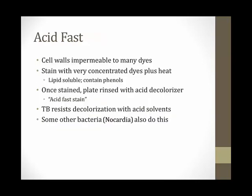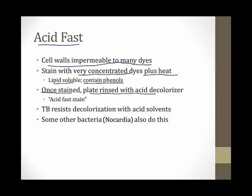Because standard stains don't work well, we use a special technique called acid-fast staining to identify tuberculosis. The cell walls are impermeable to many dyes, but they will stain with very concentrated, lipid-soluble dyes plus heat — these contain phenols, helping them penetrate the mycolic cell walls. After staining, you rinse with an acid decolorizer — which is why it's called an acid-fast stain. Tuberculosis resists decolorization with acid solvents. Some other bacteria like Nocardia also do this.